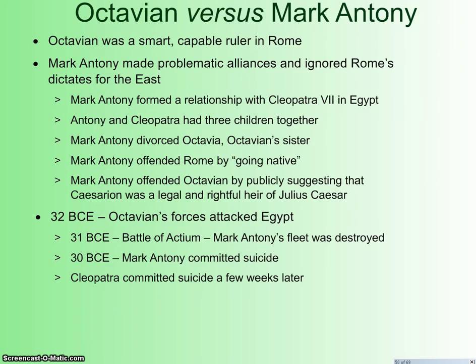Octavian is very smart and a very capable ruler. Mark Antony, not so much. He makes some bad decisions and bad alliances, and he ignores the dictates of the Senate and Octavian. He forms a relationship with Cleopatra, they have some children, and he divorces Octavian's sister, Octavia — always not a good idea to tick off your rival. Rome says he's gone native and is no longer a Roman. He also suggests that Caesarion, the child Cleopatra had by Caesar, is the legal and rightful heir of Julius Caesar. Octavian takes umbrage at that, so they go to war.